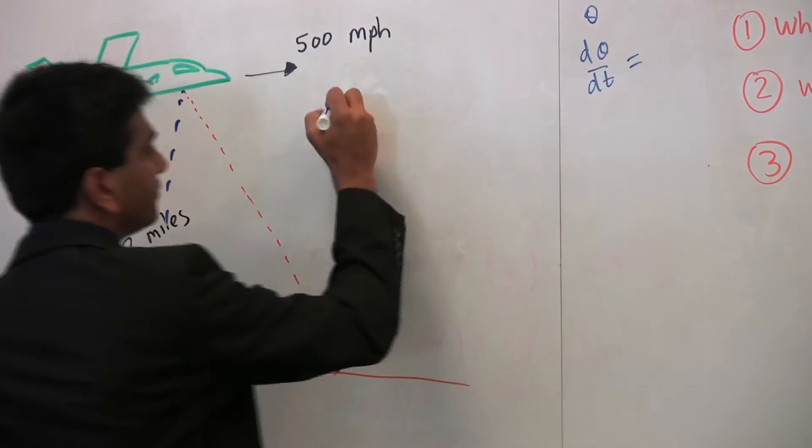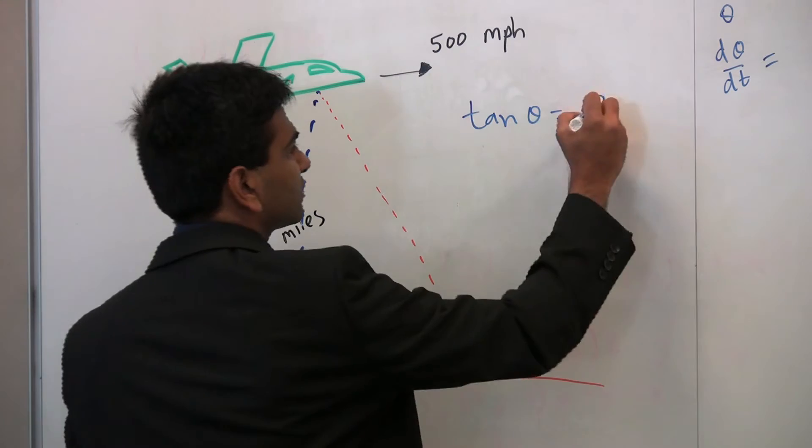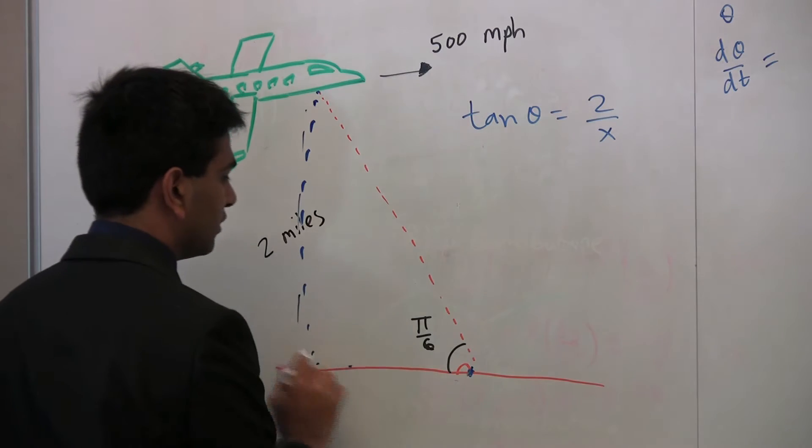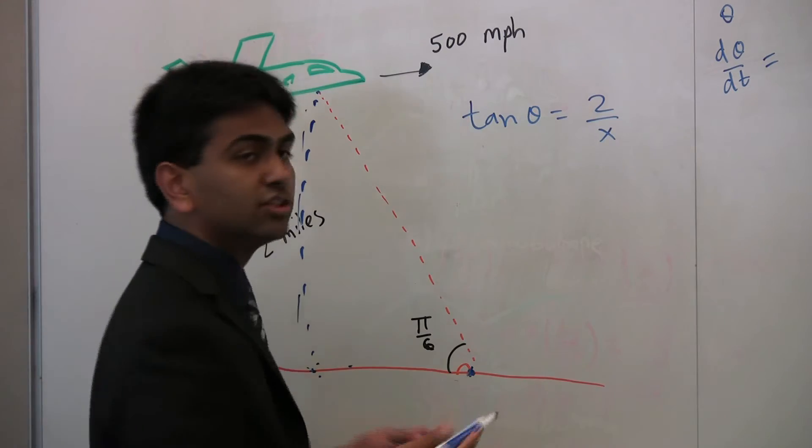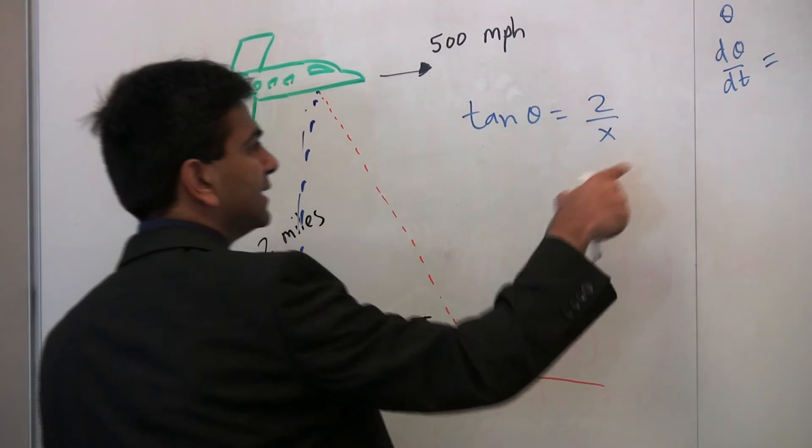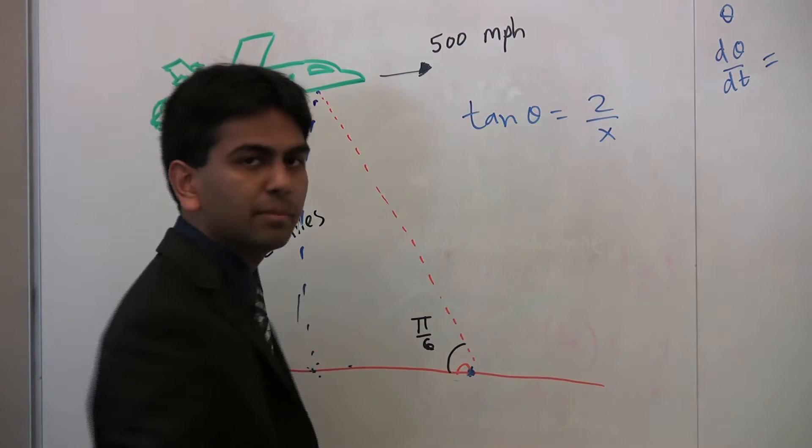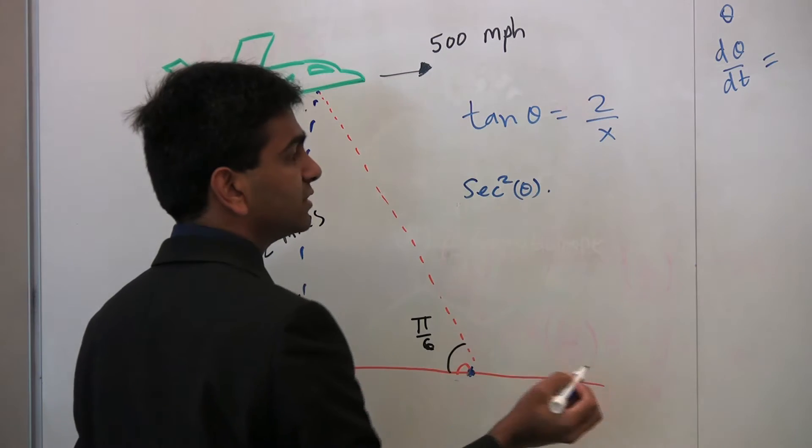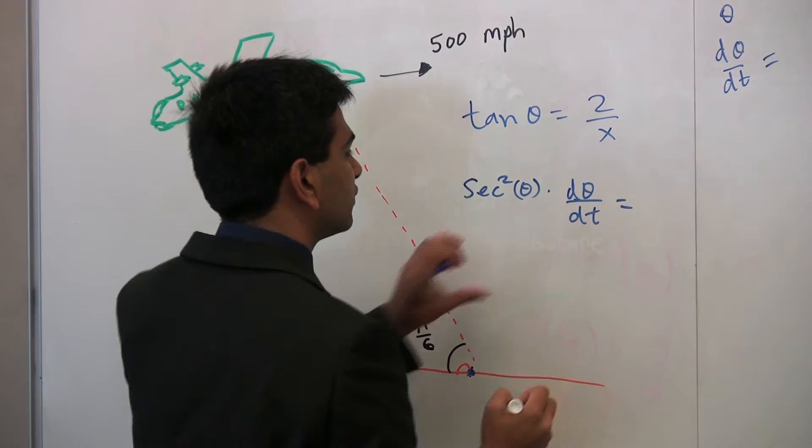So, we know that the tangent of theta is actually equal to two over, let's call this, x. x is going to be how far the plane is from the camera, just horizontally. So, now, what we can do is just take the derivative and then we'll have something that's dθ/dt in the equation. So, taking the derivative of this, we know that the derivative of tangent from a previous video is the secant squared of theta. And, of course, using the chain rule, times dθ/dt, that's where that actually comes in. So, we just took the derivative of the left, now we can just take the derivative of the right.